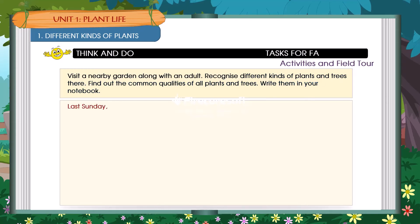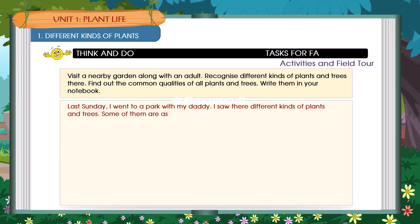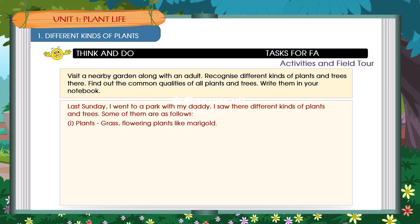Last Sunday, I went to a park with my daddy. I saw there are different kinds of plants and trees. Some of them are as follows: Grasses, Flowering plants like marigold, rose, lily, pansy, jasmine, etc.